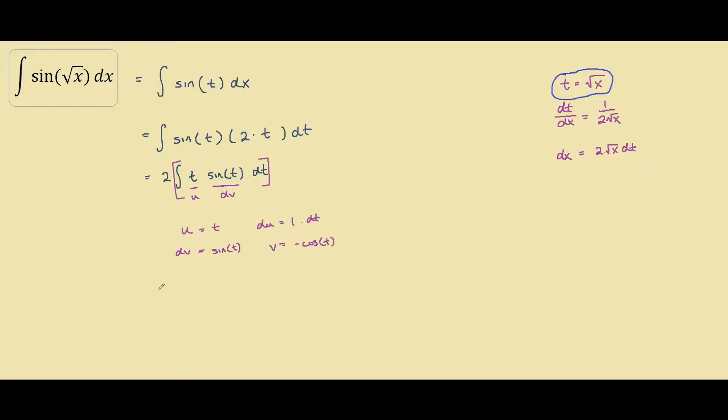So using the integration by parts formula, we're left with 2 outside of u times v, which is negative t cosine t, minus the integral of v du, so negative cosine t.